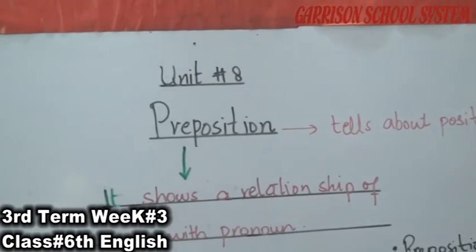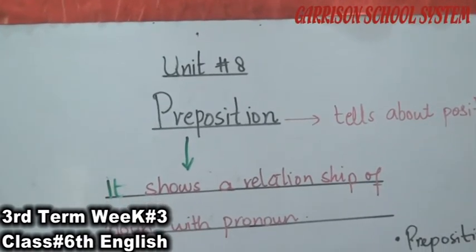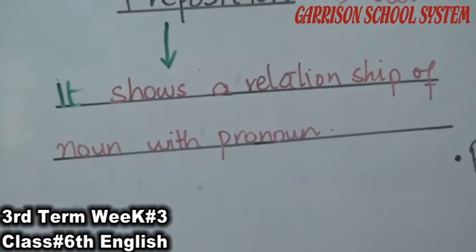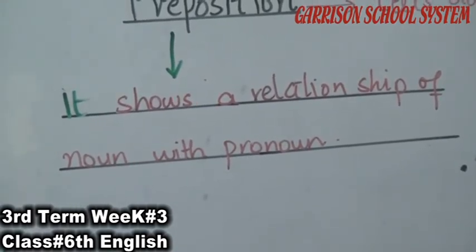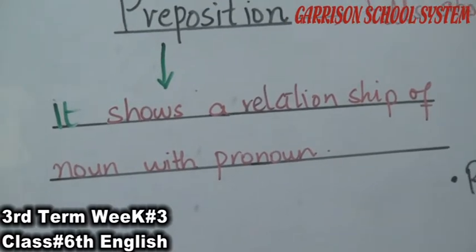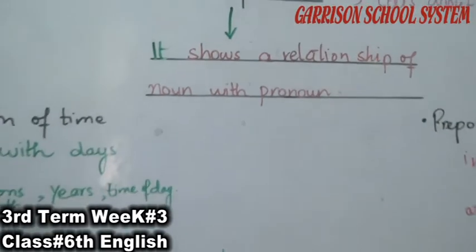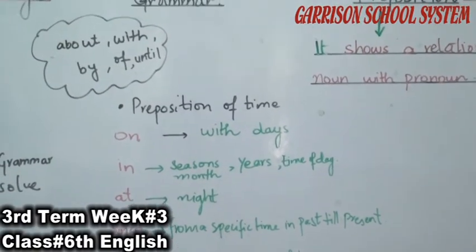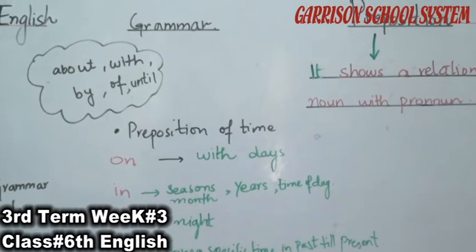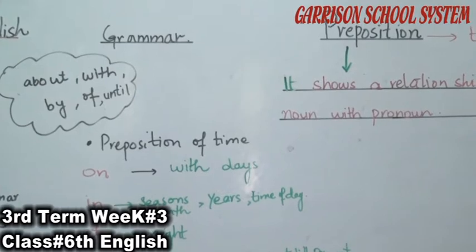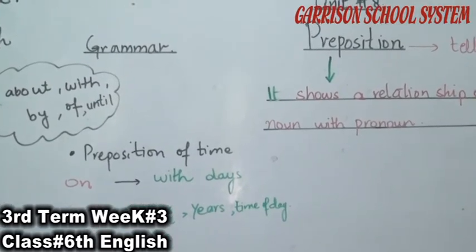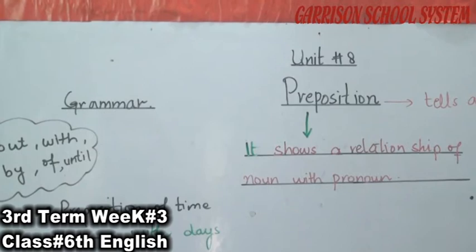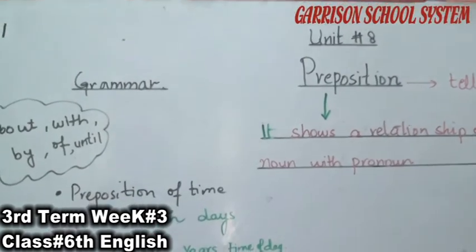Our topic is prepositions. Prepositions show the relationship of a noun with a pronoun — what relationship exists between the subject (noun) and the pronoun. And sometimes it also tells about the position. There are two types of prepositions: prepositions of time and prepositions of direction.